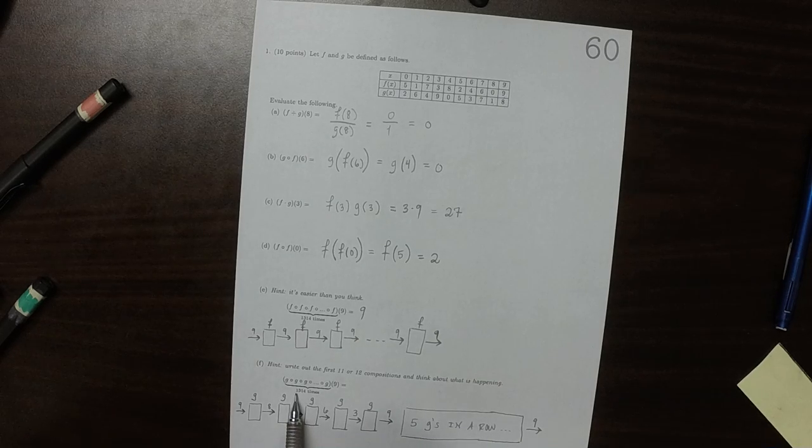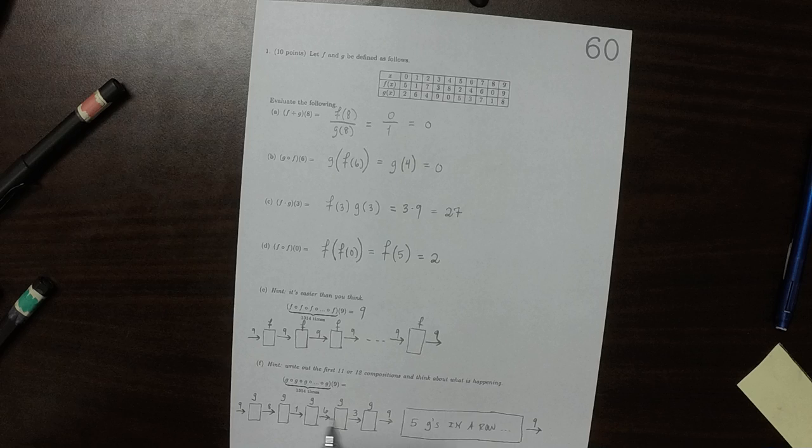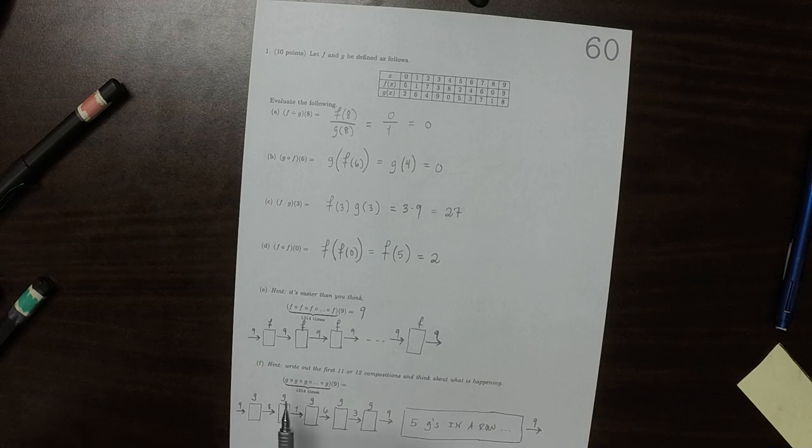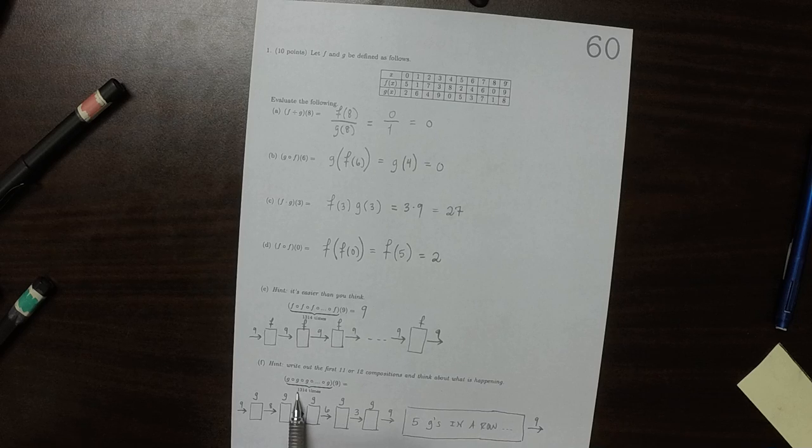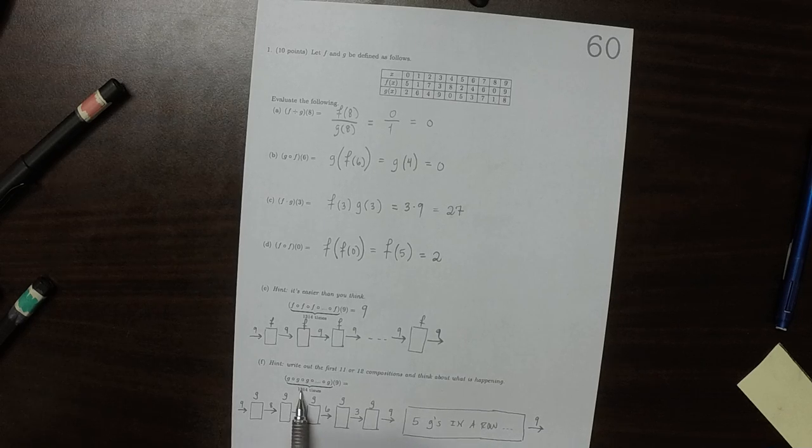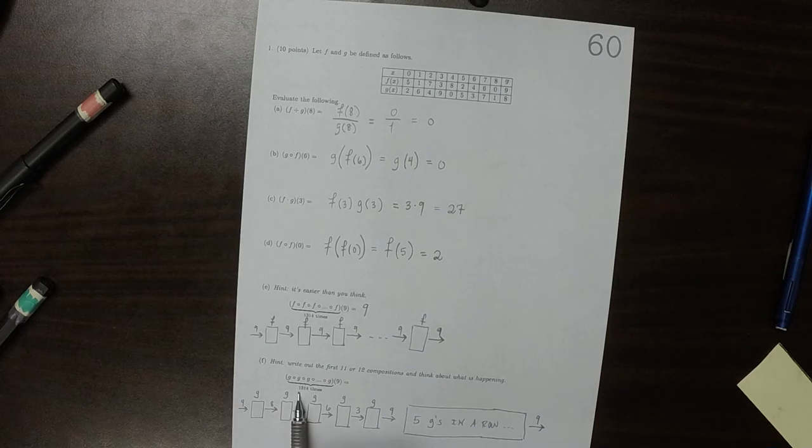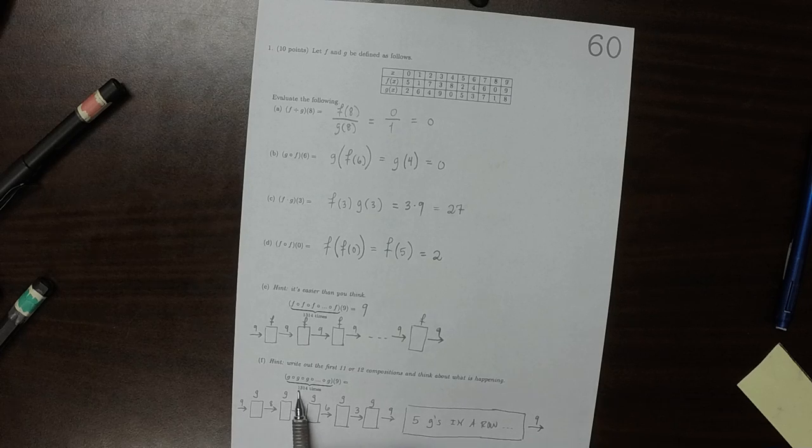And so look at what happens. We're going to do this - 10 g's in a row is the same as doing nothing, which means that 1,000 g's in a row is the same as doing nothing. And then another 300, because 300 is divisible by 10, is the same as doing nothing.